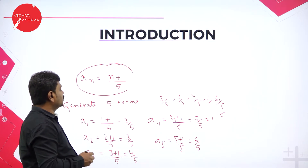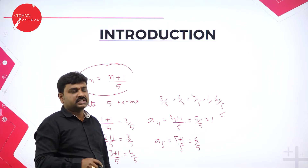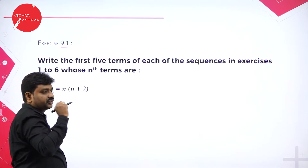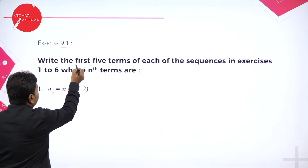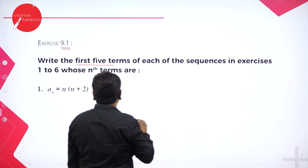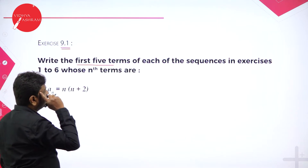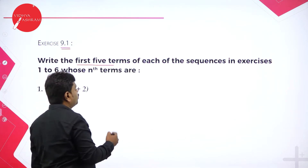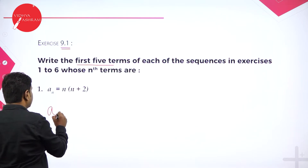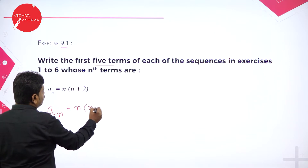Now we will go to the exercise on Sequence and Series — that is Chapter 9, Exercise 1. The task is: write the first 5 terms of each sequence. They give a rule and you need to find the first 5 terms. From problem 1 to problem 6 we need to do this. For problem 1, a_n = n(n+2).